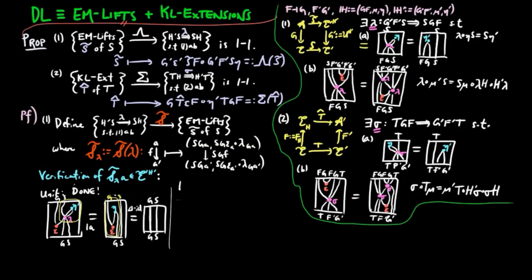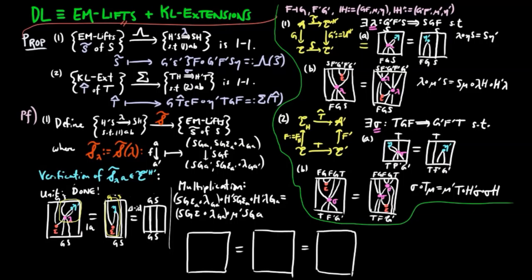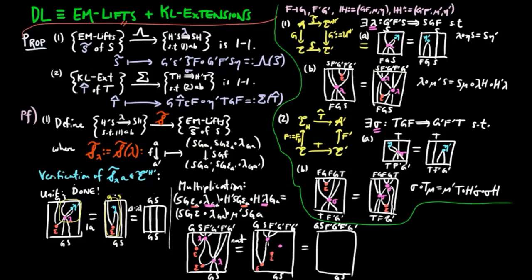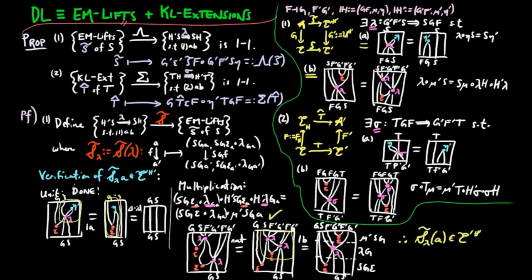Then to show that Kleis(λ)(A) respects multiplication of the monad H', we need to verify the following equation, where the first expression has the following string diagram representation. By naturality, we can deform the diagram by lowering and raising the dots, and then use property 1B to arrive at the lower expression. Therefore, Kleis(λ)(A) is a well-defined Eilenberg-Moore object.